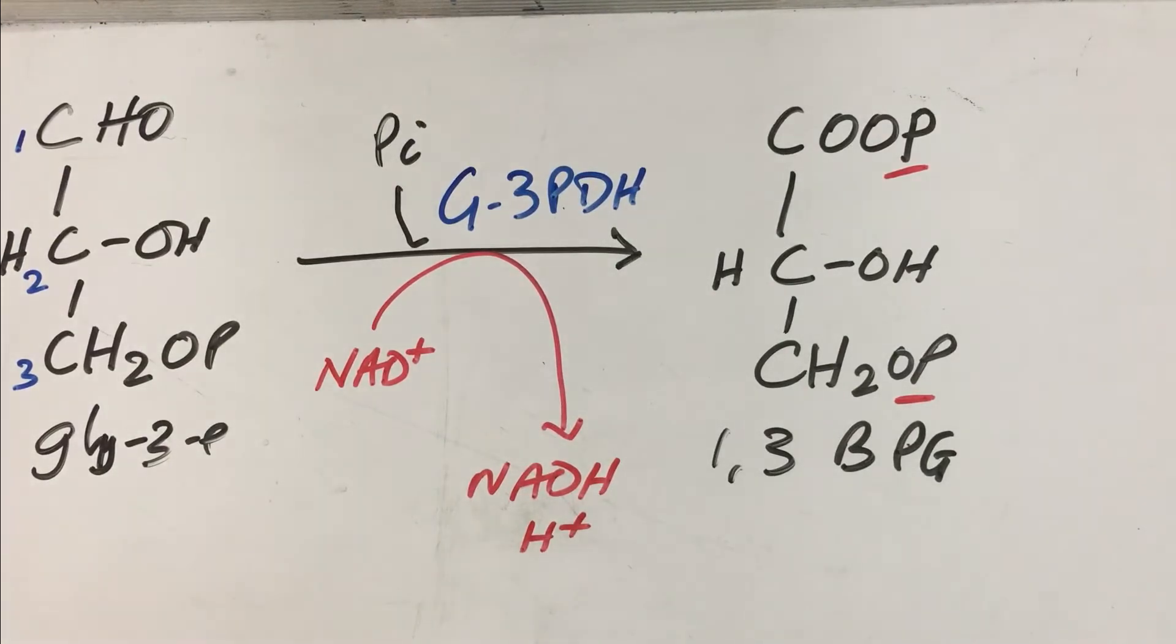By making this acyl phosphate, the energy content of this molecule has increased. We will be able to harvest this energy as ATP molecules. Therefore, it is a substrate level phosphorylation. What is the meaning of substrate level phosphorylation? That is the production of a high energy phosphate coupled directly to the oxidation of a substrate molecule. There is a slight difference from oxidative level phosphorylation, which we will explore later. The delta G of this reaction is plus 6.3 kilojoules per mole.